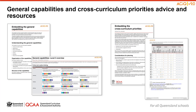The Continua provide a sequence of learning for the capability from Level 1 to Level 6, which can be helpful for teachers when catering for students with diverse needs. The QCAA has also developed advice documents to support teachers to use the literacy and numeracy progressions. These progressions provide observable indicators of increasing complexity in literacy and numeracy, which can help teachers to develop targeted teaching and learning plans for students working at, above, and below year-level expectations.